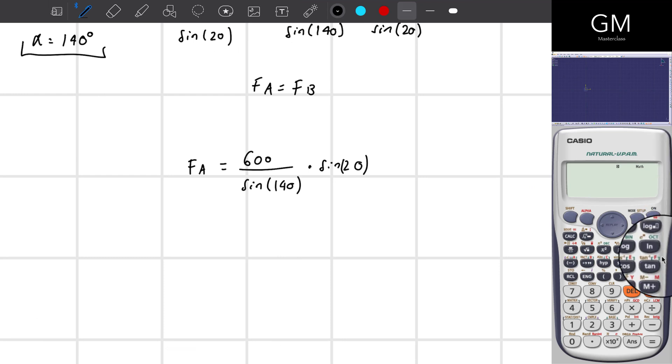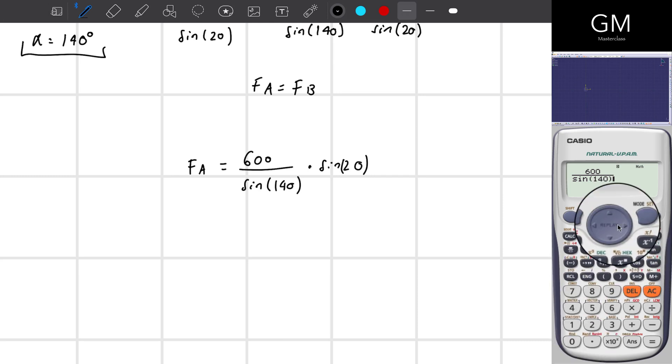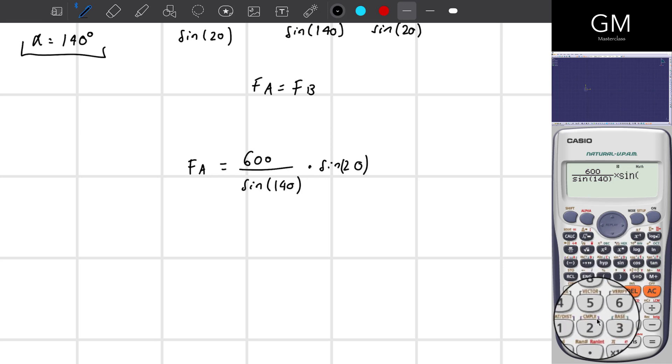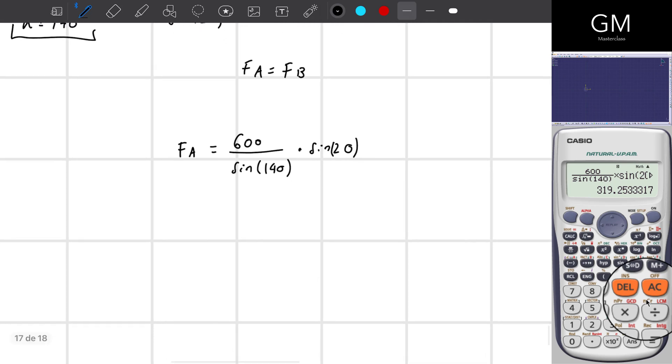I put this on the calculator, which is 600 divided by the sine of 140 multiplied by the sine of 20. It's equal to F_A. That is equal to F_B. But I need the magnitude. And that is equal to 319.2533. I always use four significant digits after the comma.